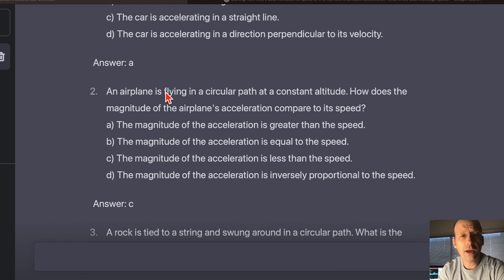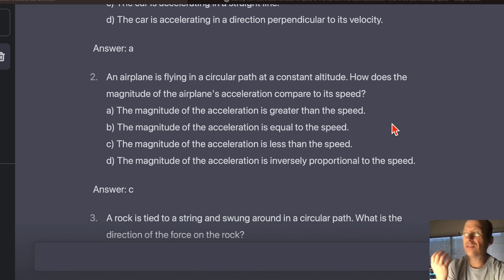Next question. An airplane is flying in a circular path at a constant altitude. How does the magnitude of the airplane's acceleration compare to its speed? Okay, this is just a straight recall. You know, the acceleration is V squared over R. But let's just see. The magnitude of the acceleration is greater. That's not, that can't be true. One, you're comparing two different things. You're comparing velocity and acceleration.